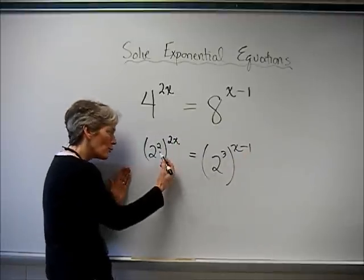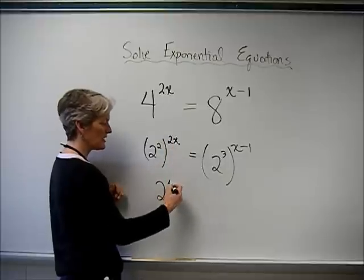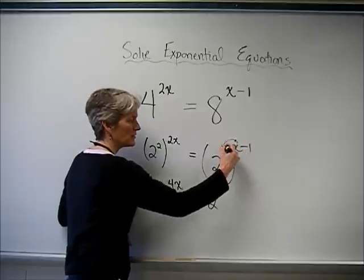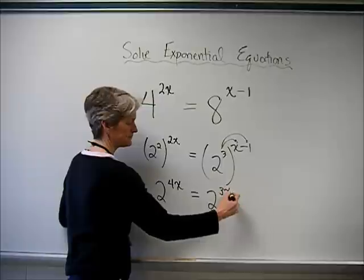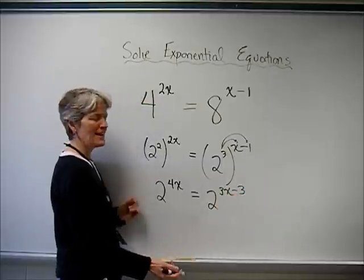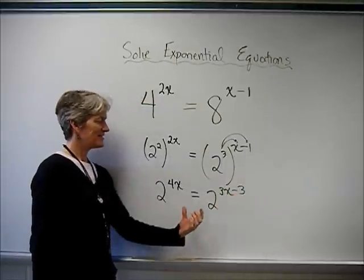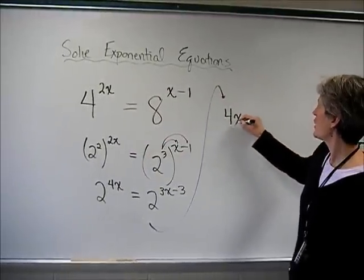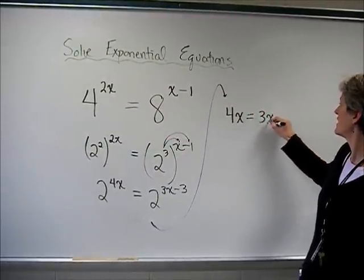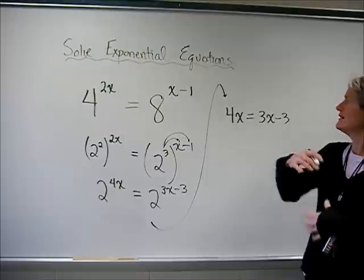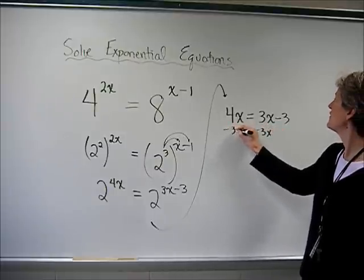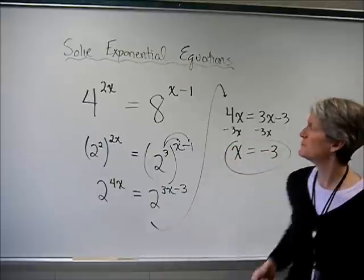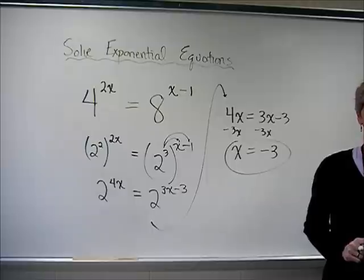Raising an exponent to another exponent, you multiply together those exponents. Same thing here. And we have to remember to distribute that 3. So now I'm ready for my leap of logic. Things are the same. Therefore, the exponents must also be equal to each other. Let's solve for x. Get x by itself. And here I have x equals negative 3. That is the x value that makes that equation true.